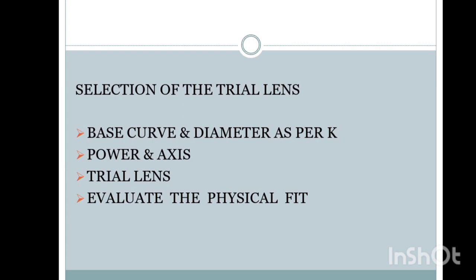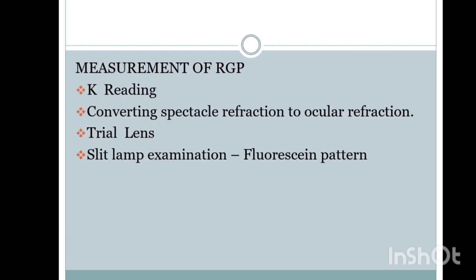We should evaluate the physical fit. First, let the lens settle on the patient's eye and let the patient blink and get comfortable. See that there is no excessive tearing. After that, do a slit lamp examination — you can do this prior to checking the fluorescein fit. Observe how the lens is sitting on the patient's eye, whether there is any movement, and check for high riding or low riding lens.